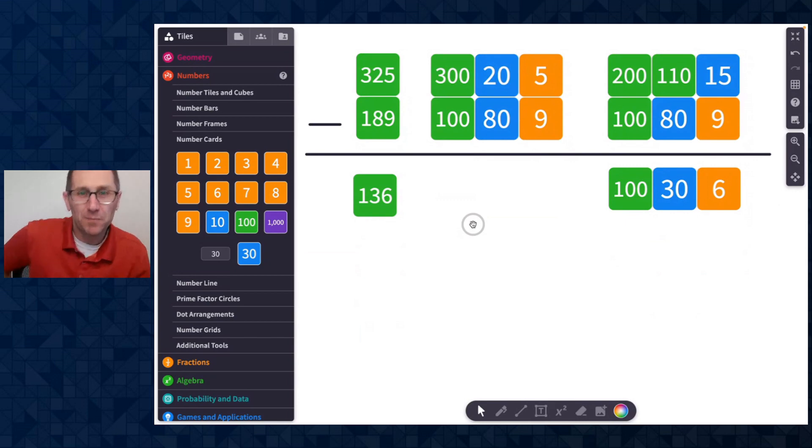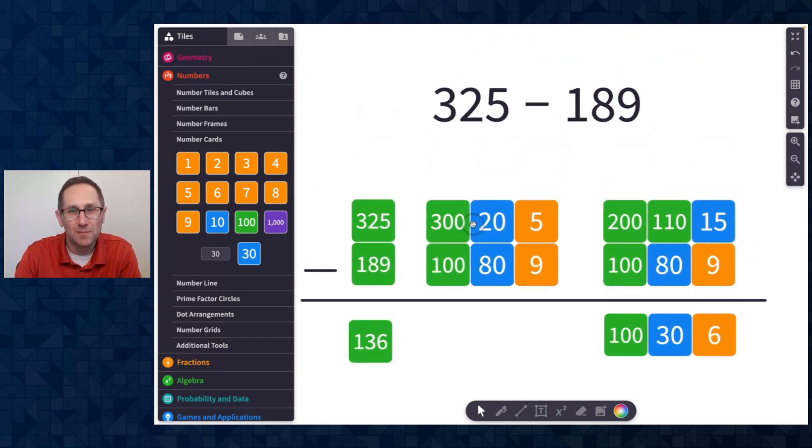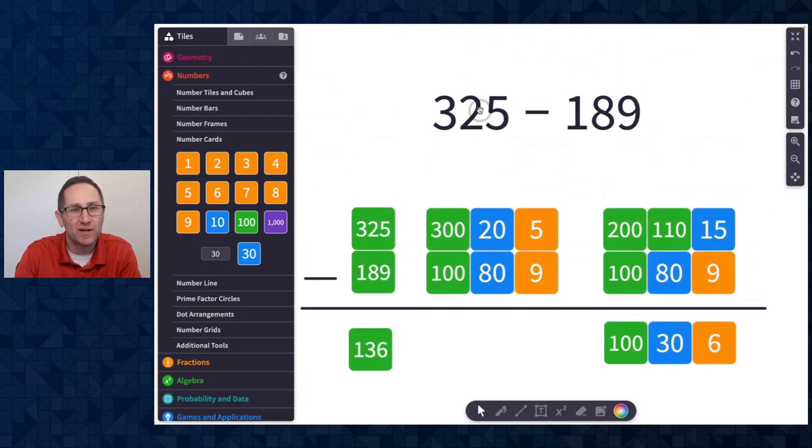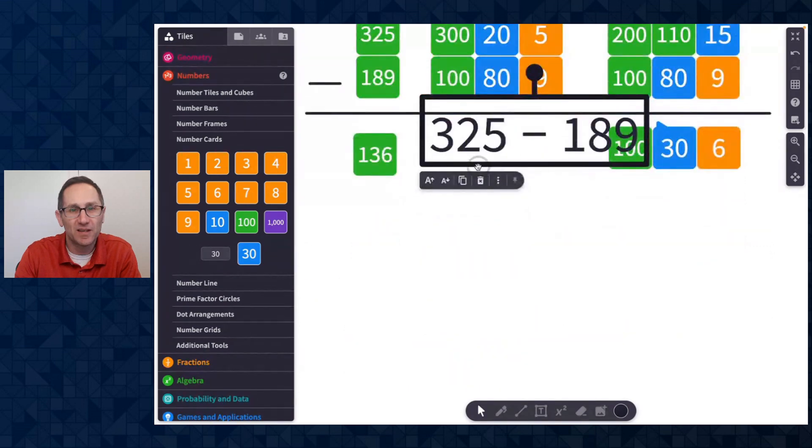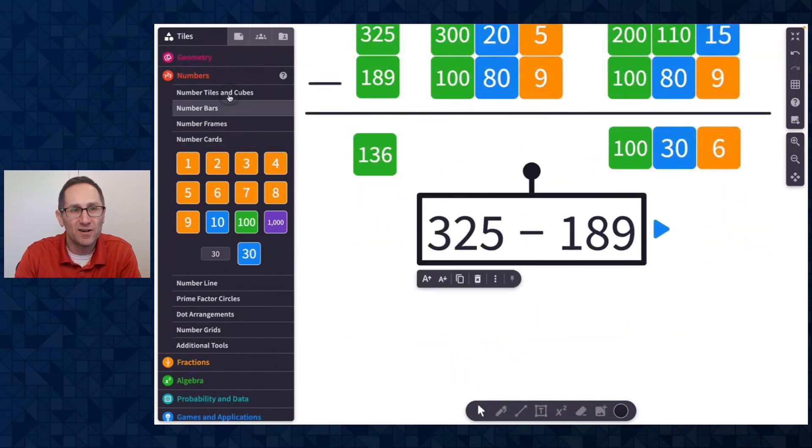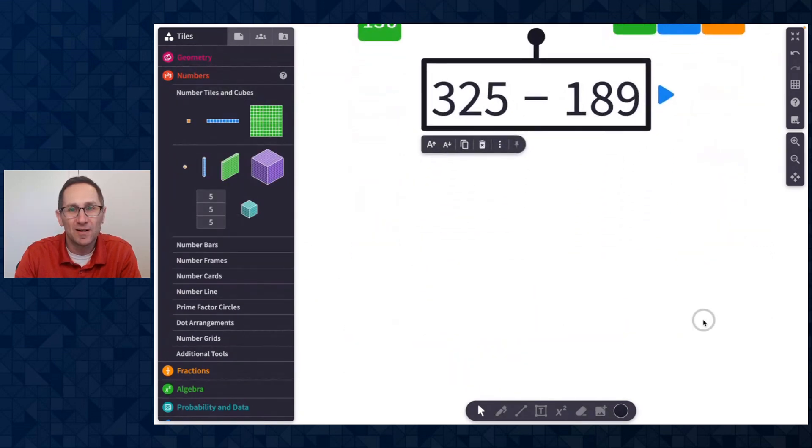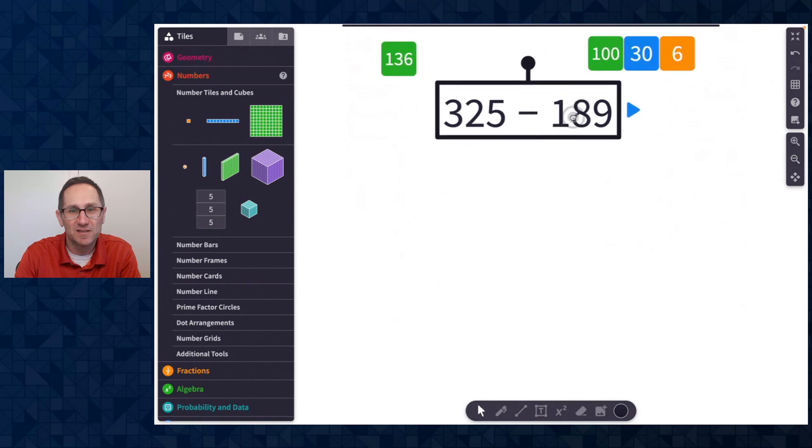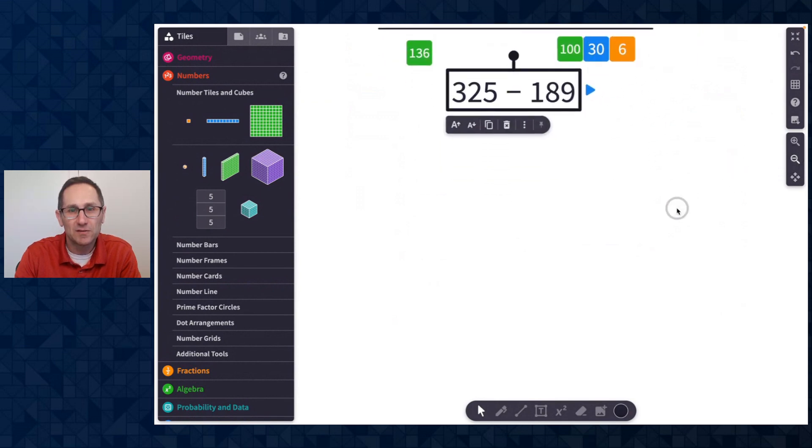For some students that might be a little bit too abstract, so maybe breaking those down into the actual cubes might be a representation that is more appropriate for them. So let's do the same problem, 325 minus 189. I'll move it down the canvas here with our number cubes. I'm going to have to zoom out a little bit because these take up a little bit more room.